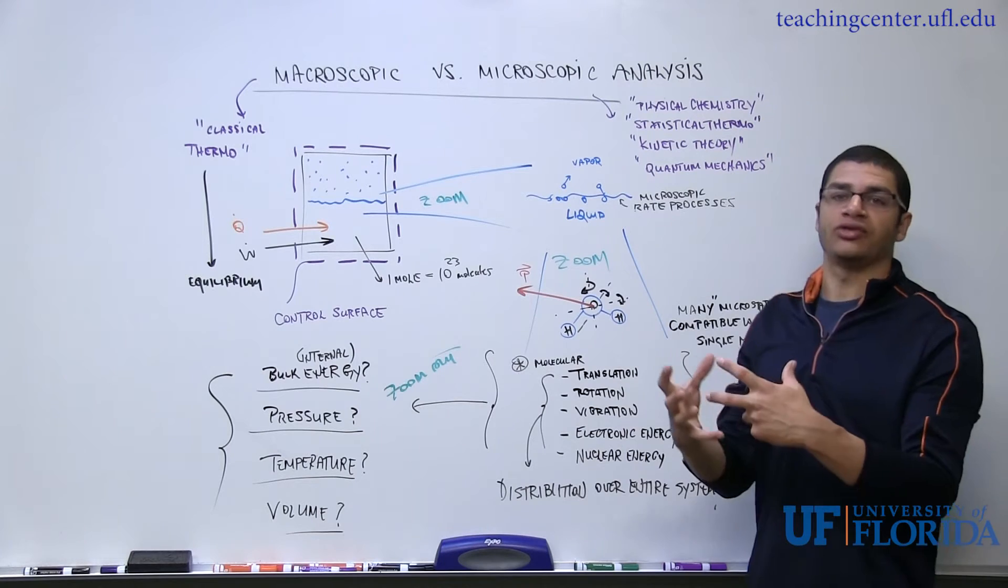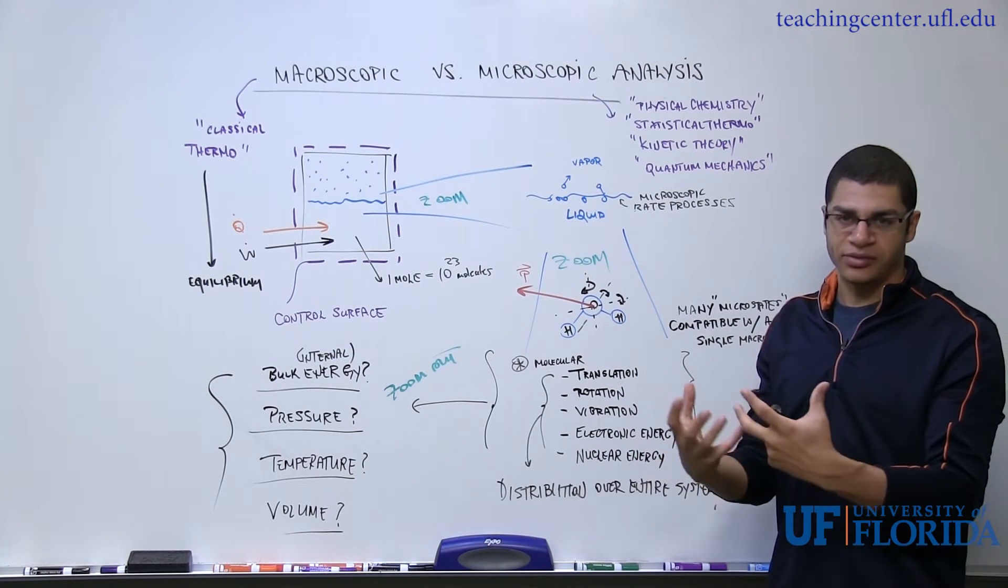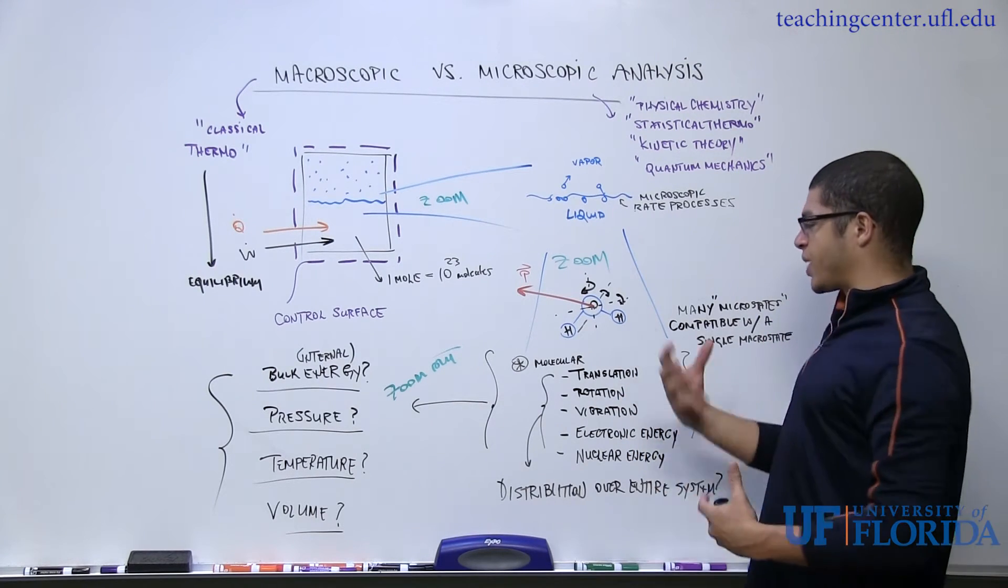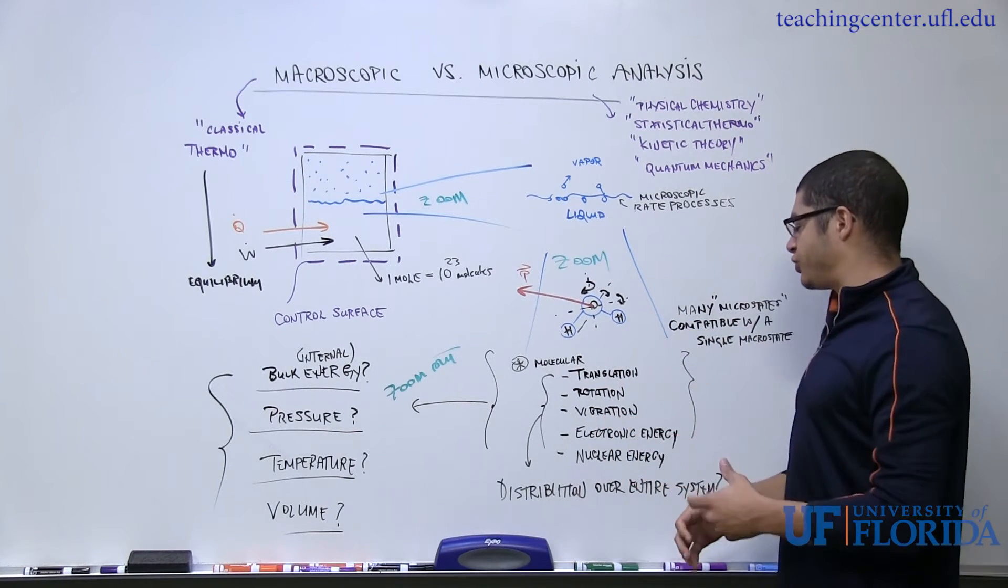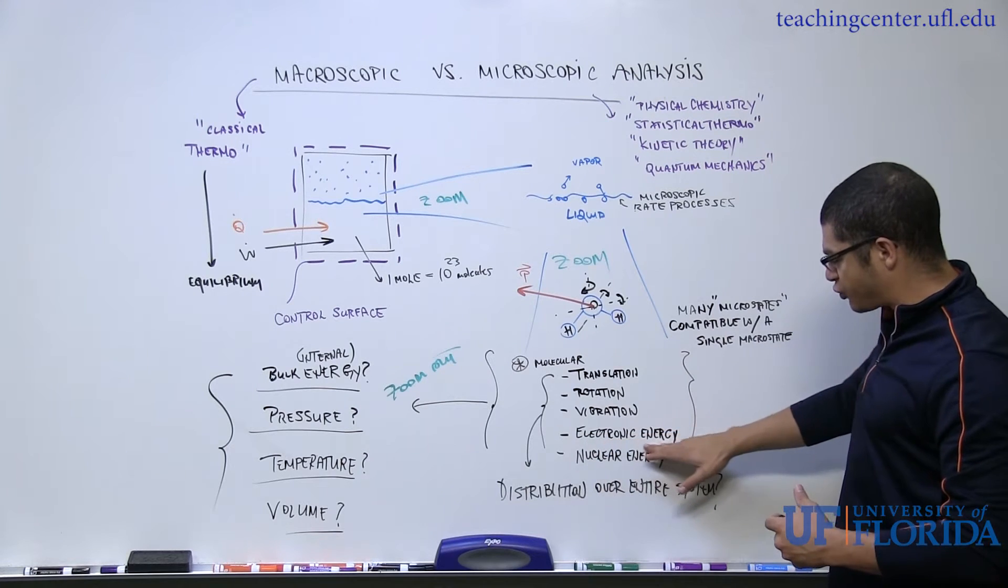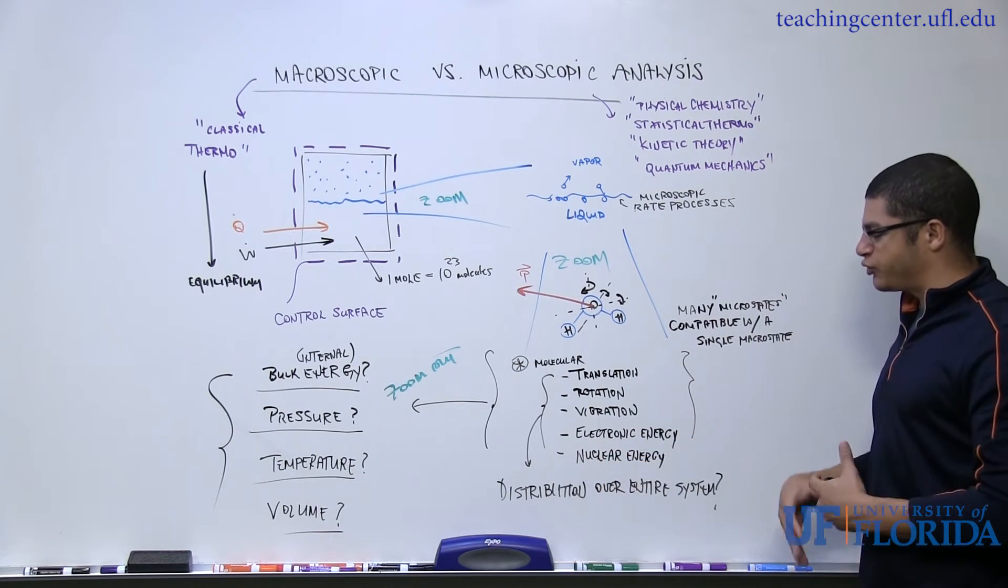Each of these atoms has a particular electronic configuration, and the electrons themselves possess energy and they interact with other electrons and the other atoms. So there's potential energy as well. There's electronic energy, and there's nuclear energy as well.